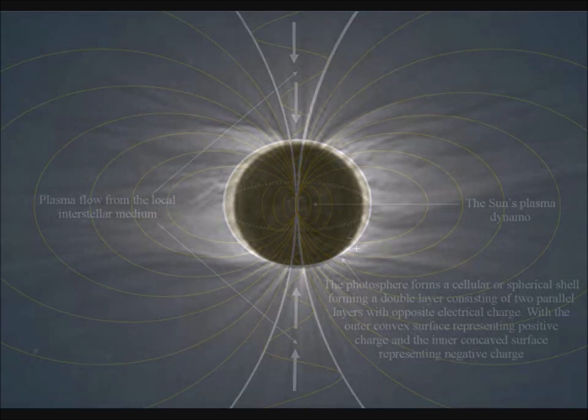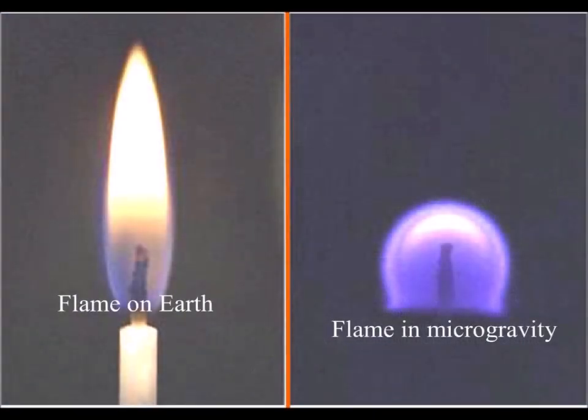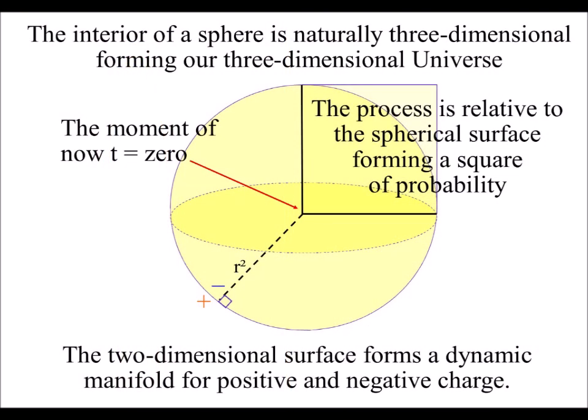In this theory, spherical geometry forms naturally in the universe, with a process of spherical symmetry forming and breaking, forming the potential for ionized plasma dynamos.